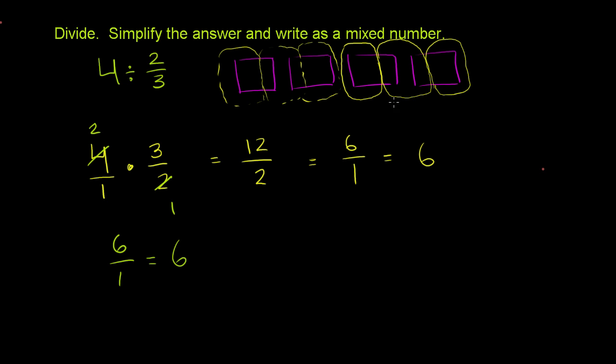Now, how many groups of 2 thirds do we have? We have 1, 2, 3, 4, 5, 6. So we have 6. 4 can be divided into 6 groups of 2 thirds. So it's just like regular division, sometimes a little harder to visualize because we're dealing with fractions.